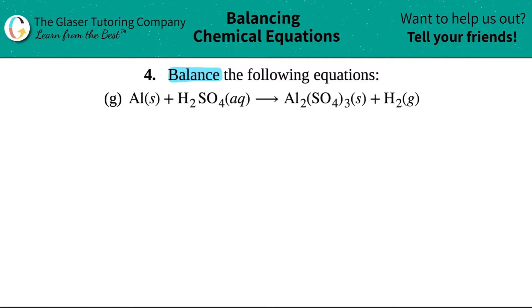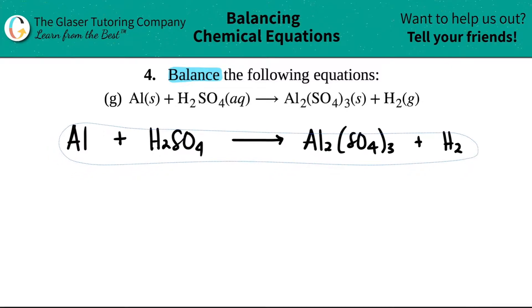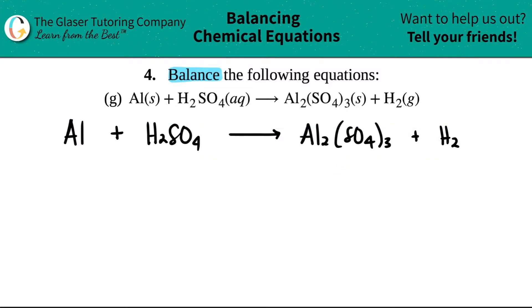First thing I like to do is I'm just going to rewrite it because I want to have a little bit more room here. So Al plus H₂SO₄ will yield me Al₂(SO₄)₃ and then plus H₂. Remember, when you're balancing, does anybody care about the states? No, nobody cares about the states. You can disregard that. Pretend that those aren't even there. You do not need them to balance the equation.